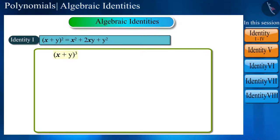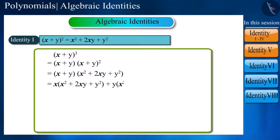By applying Identity 1, we can write (x + y)³ as (x + y)(x + y)², which becomes x(x² + 2xy + y²) + y(x² + 2xy + y²). When simplified, this becomes x³ + 3x²y + 3xy² + y³.